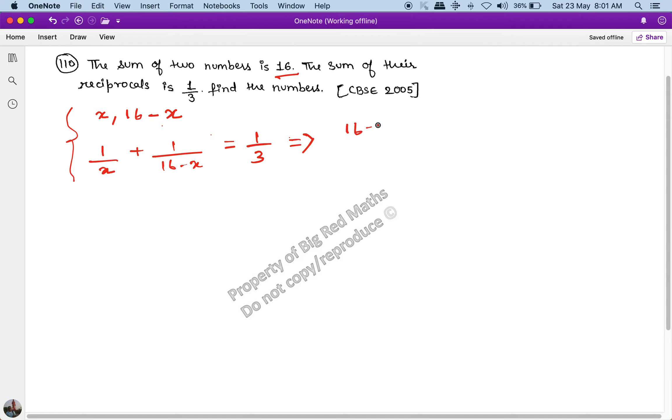16 minus x plus x, whole thing divided by 16x minus x square is equal to 1 upon 3. This x will cancel. Cross multiply: 48 equals 16x minus x square.